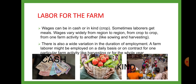Wages can be in cash or in kind. Kind means crop, grocery, meals, etc., other than money. Sometimes laborers get meals. Wages vary widely from region to region, from crop to crop, from one farm activity to another like sowing and harvesting.